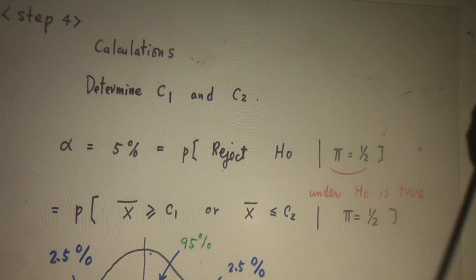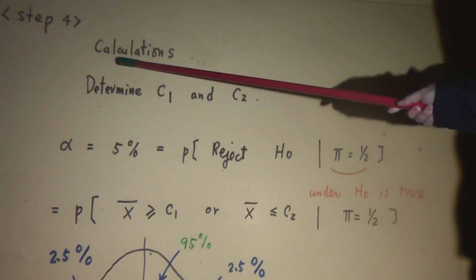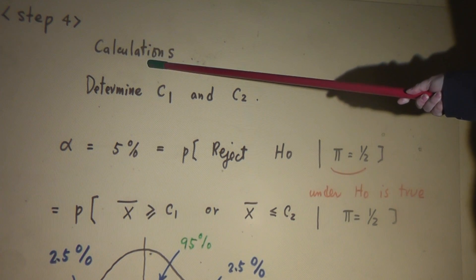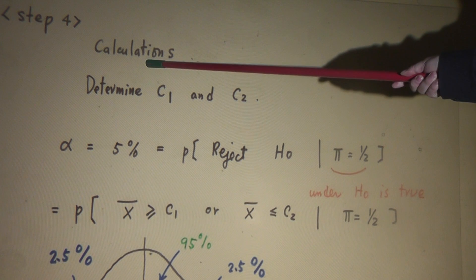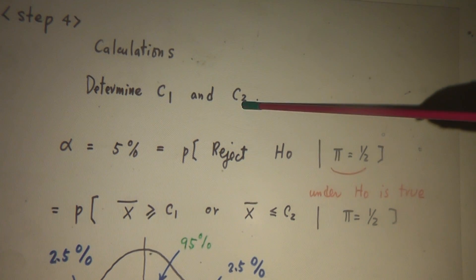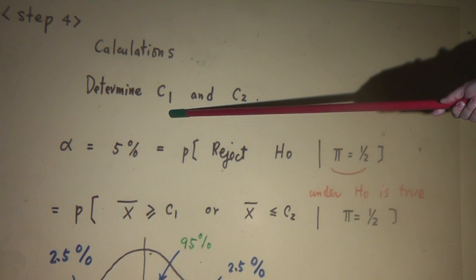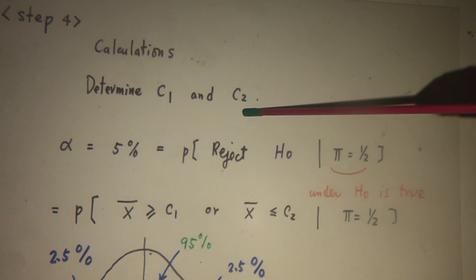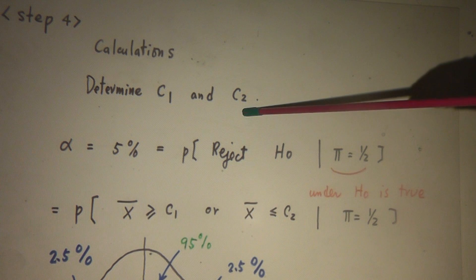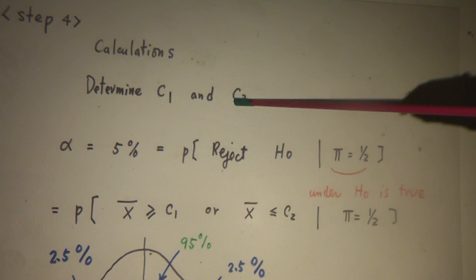Now let's proceed to step 4: calculations. In step 4, we're going to determine C1 and C2. How big? You call it too big. How small? You call it too small. Too big or too small. C1 is too big. C2 is too small. And now we're going to determine the value of C1 and C2.